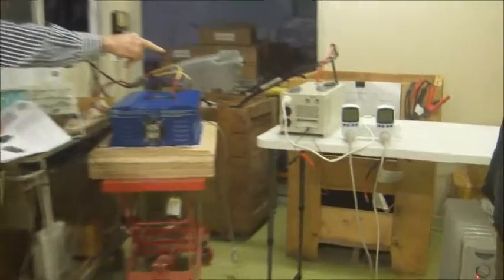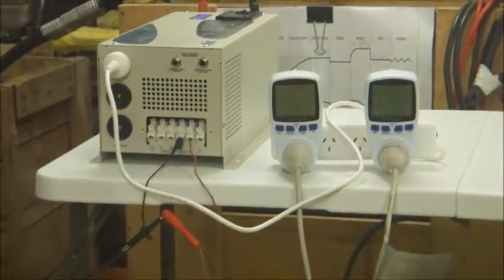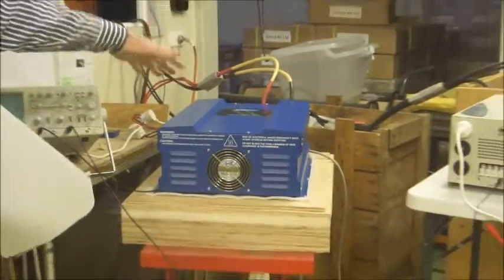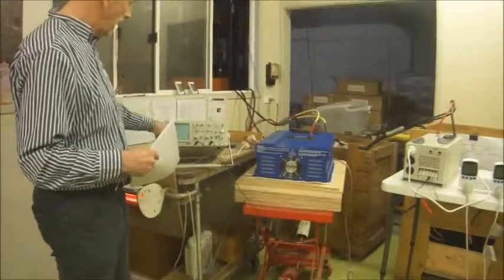How much power have we got coming out of this inverter? About 1,200 watts. So we're about 45%. How much power is coming out of this inverter? About 2,700 watts. So this is about 45% as well. They've both got about 45% power coming out of it.